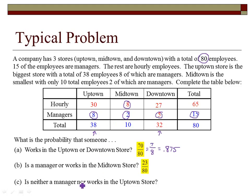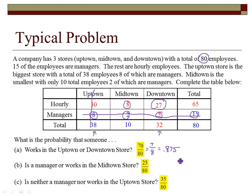For the last one — neither a manager nor works in the uptown store — I cross off managers and cross off the uptown store, then look at what remains. I've got 8 plus 27, which is 35 out of 80. If you want to reduce it, 5 goes into both, giving 7 out of 16. It's perfectly fine to leave your answer as a fraction or as a decimal.